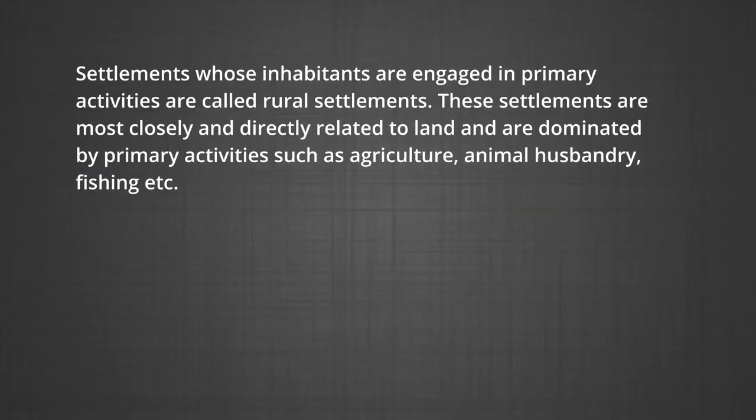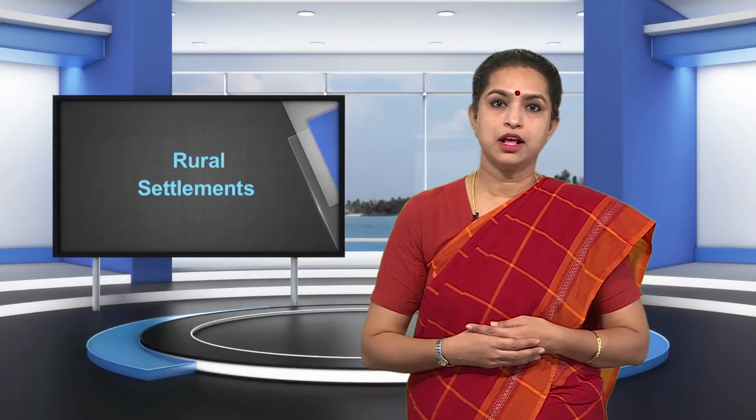Settlements whose inhabitants are engaged in primary activities are called rural settlements. These settlements are most closely and directly related to local land and are dominated by primary activities such as agriculture, animal husbandry, fishing, etc. The settlement size is relatively small with small populations located in rural areas. There are temporary rural settlements too, established for limited periods of time — for example, lumber workers in forests, nomadic settlements, and the dwellings of reindeer herders.